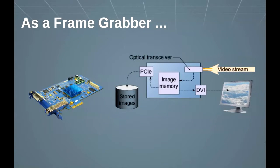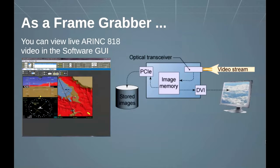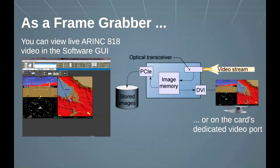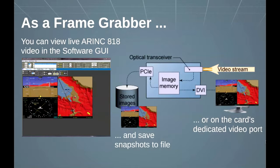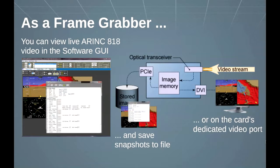As an ARINC 818 frame grabber, Matrix allows you to view live video in the GUI or on the card's video output port. You can capture and save image snapshots. Live ARINC 818 object zero data appears in the GUI and you can save snapshots to file.